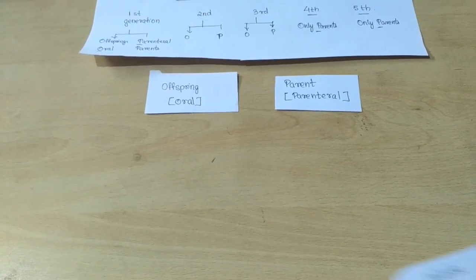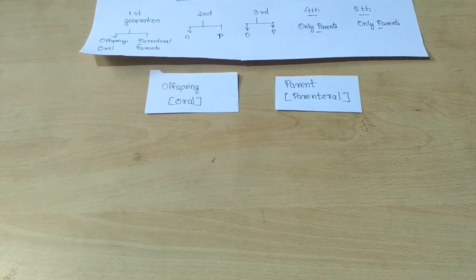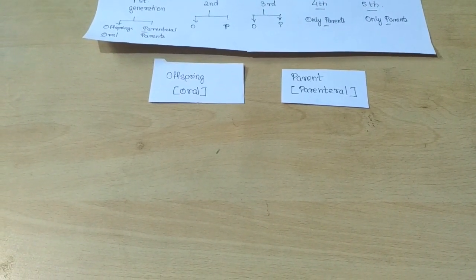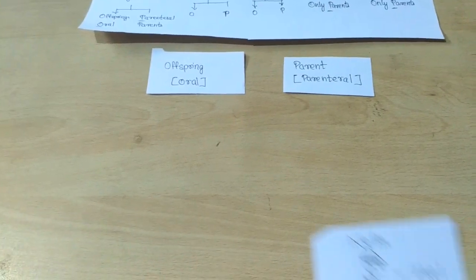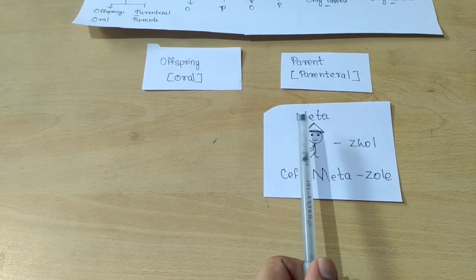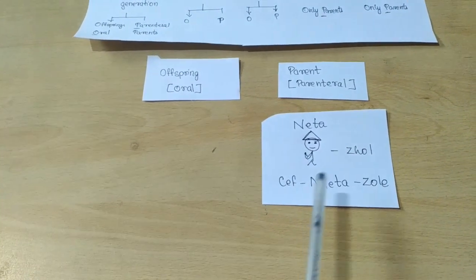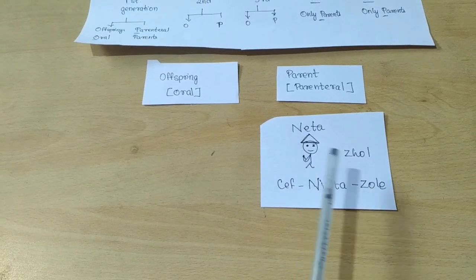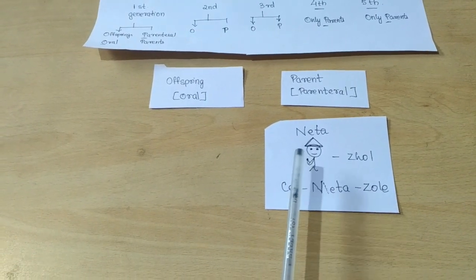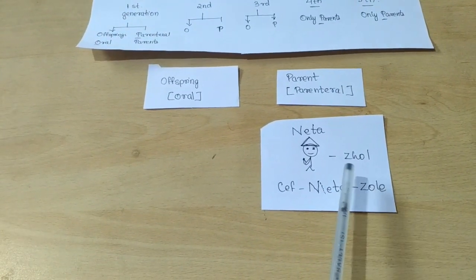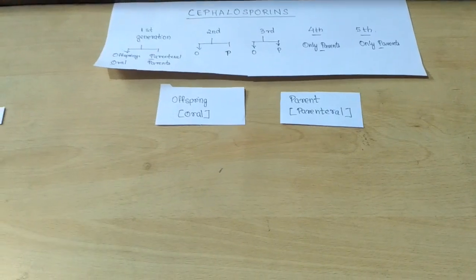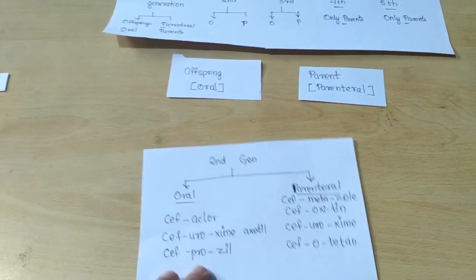The exception here is that all three parenteral drugs — Cefoxitin, Cefuroxime, and Cefotetan — are governed by 'aneta', a minister who does 'jhol'. So the drug is Cefmetazole: the prefix 'ceph', instead of 'neta' we write 'meta', and 'zole' is Z-O-L-E. So the drug is Cefmetazole.